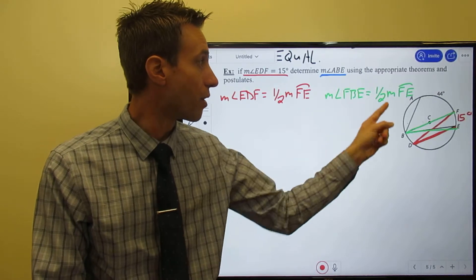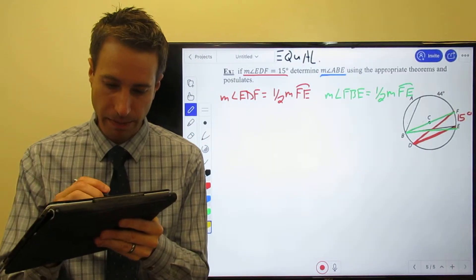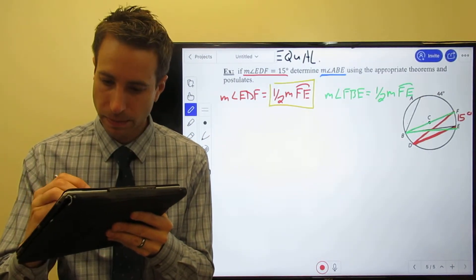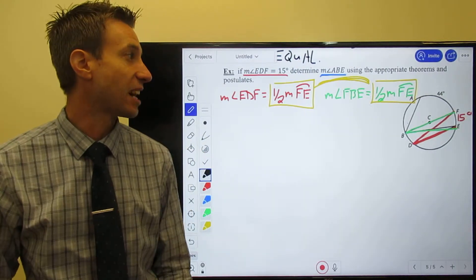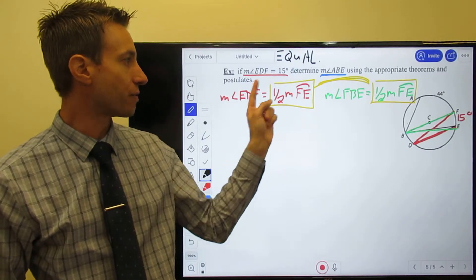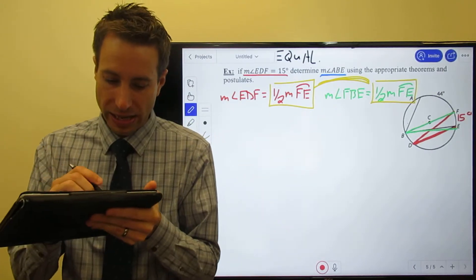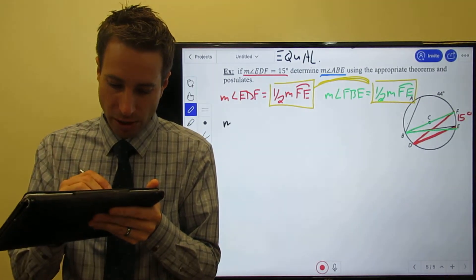Same, same. Those are the same. So what does that tell me? Well, that tells me that the measure of these two angles are equal to each other.